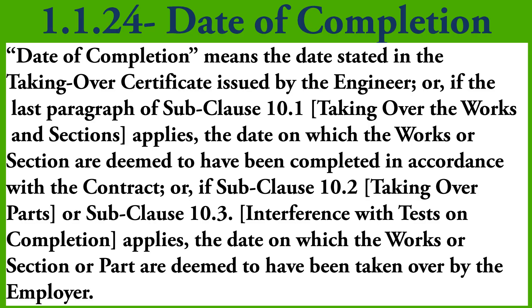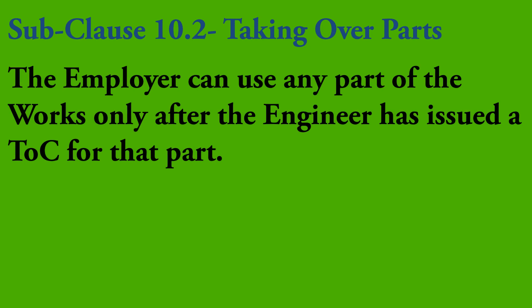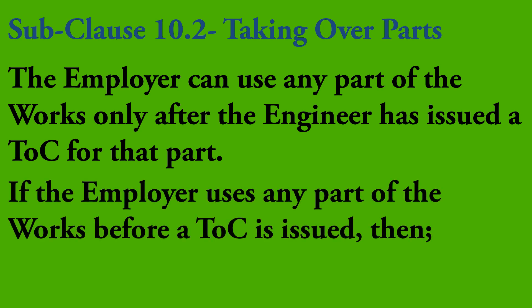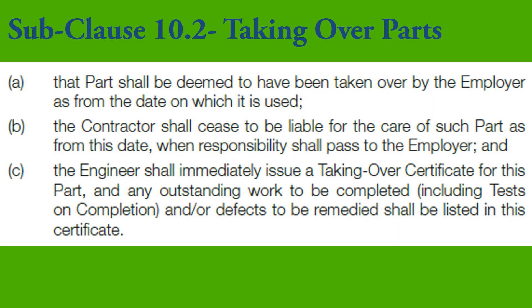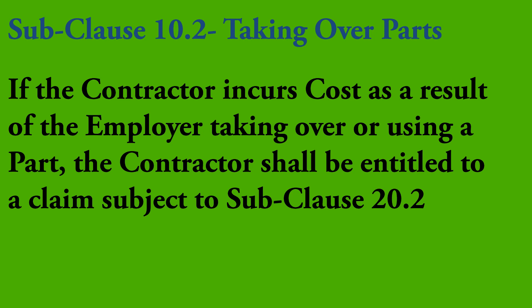The next instance related to Date of Completion is sub-clause 10.2, Taking Over Parts. The employer has the option of taking over and using a part of the works after the engineer issues a TOC for that part. However, if the employer uses a part of the works before a TOC is issued, the date the employer first uses that part becomes the Date of Completion for that part, and the engineer must immediately issue a TOC. The contractor must give a notice to the engineer identifying such part and describing such use, otherwise the contractor may still be liable. If the contractor incurs cost as a result, the contractor is entitled to a claim subject to sub-clause 20.2.